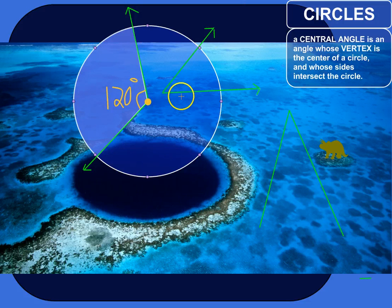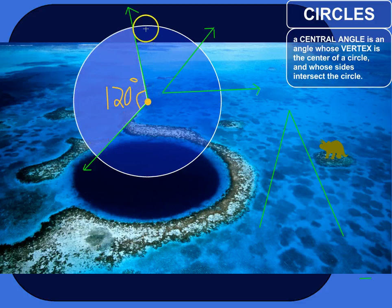So a central angle has its vertex right on the center of the circle, and the sides of the angle intersect with the circle itself.